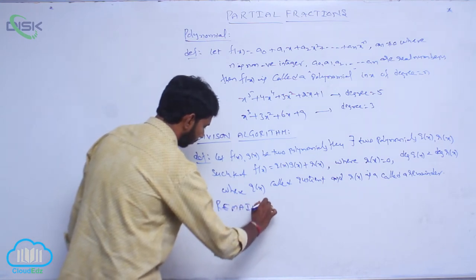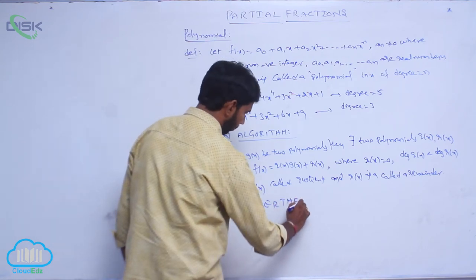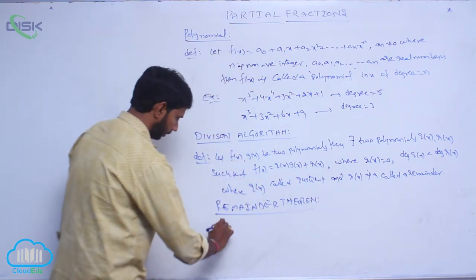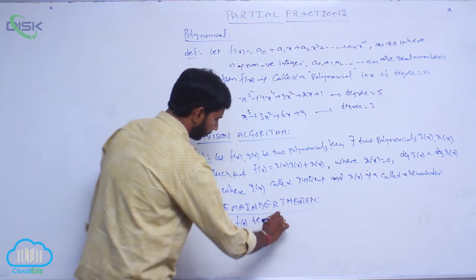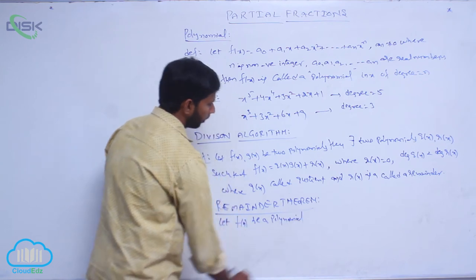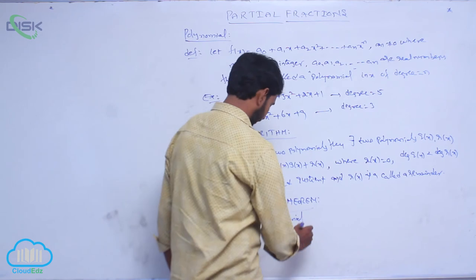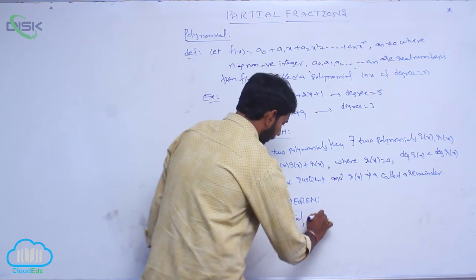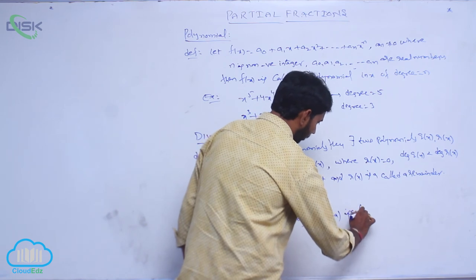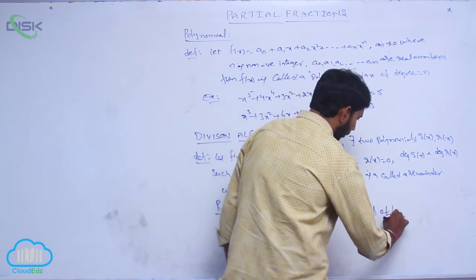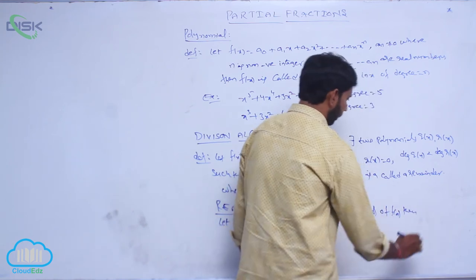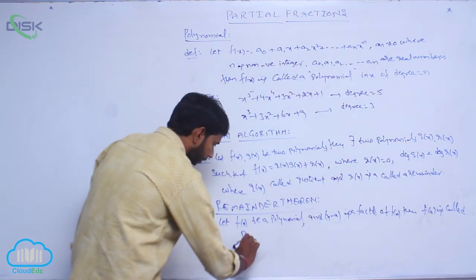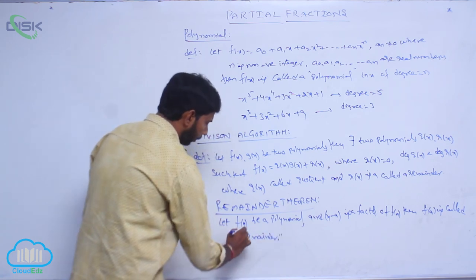Remainder theorem: Let f of x be a polynomial and x minus a is a factor of f of x, then f of a is called the remainder.